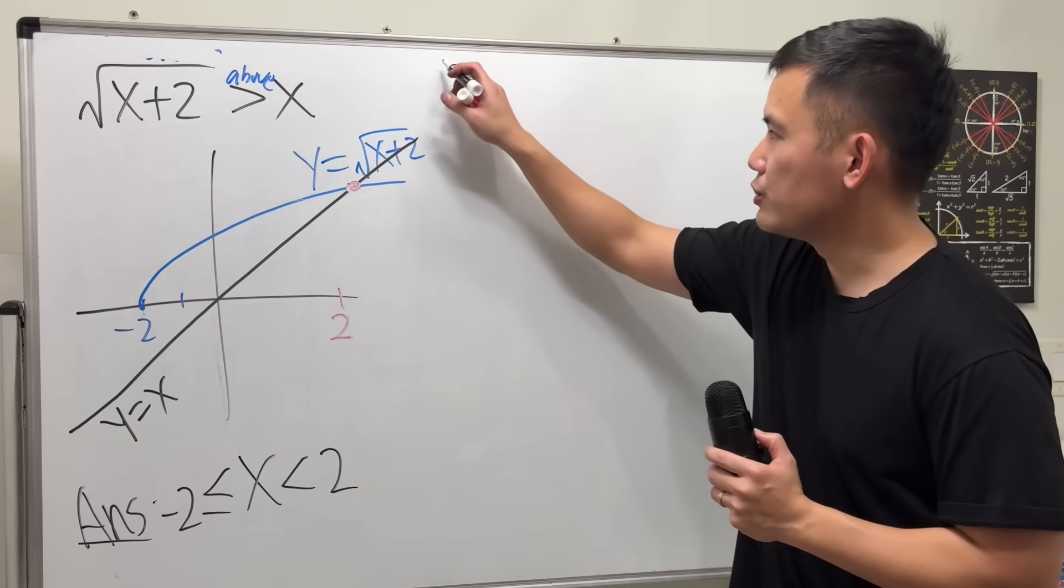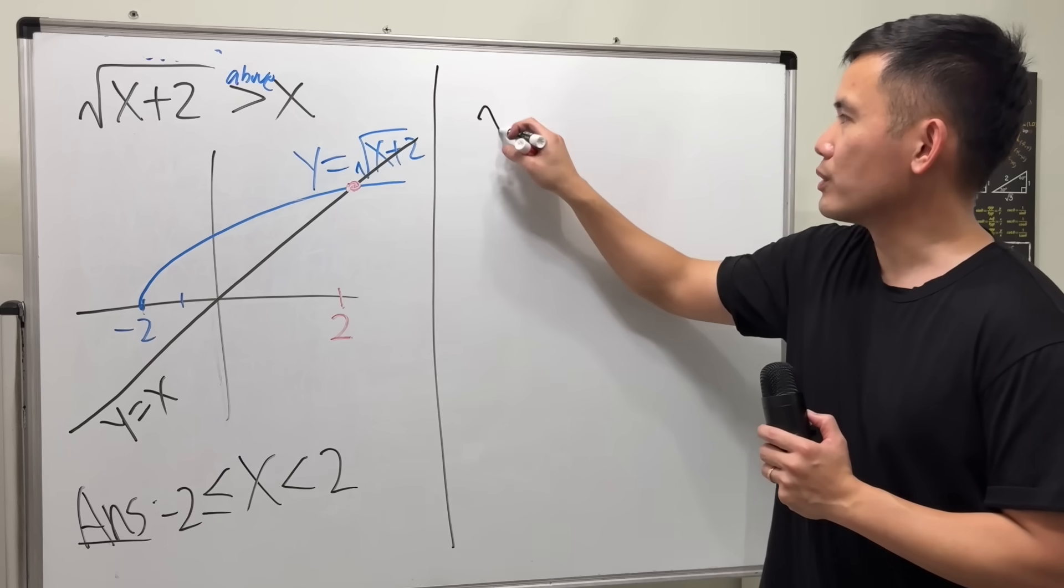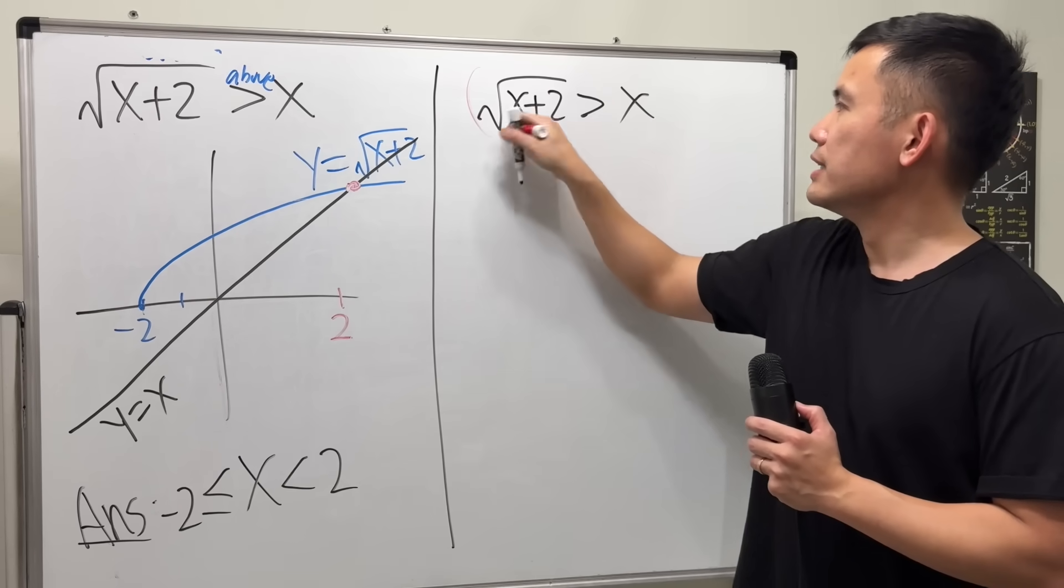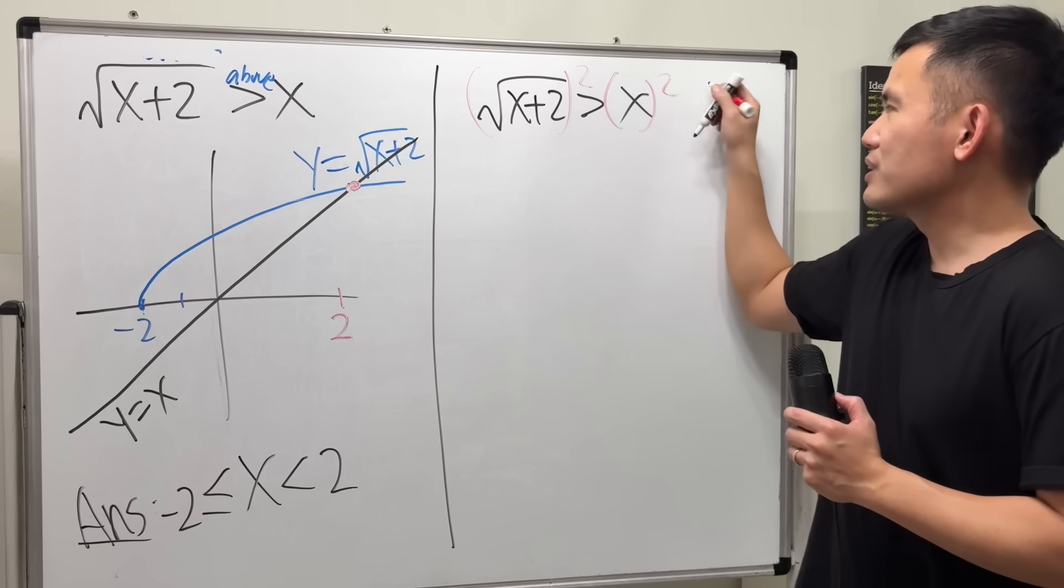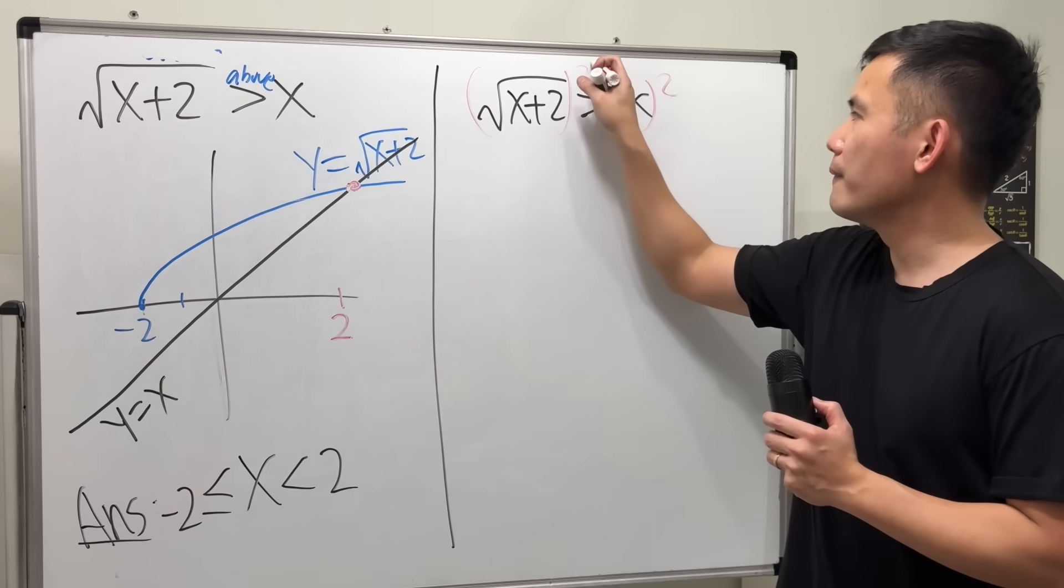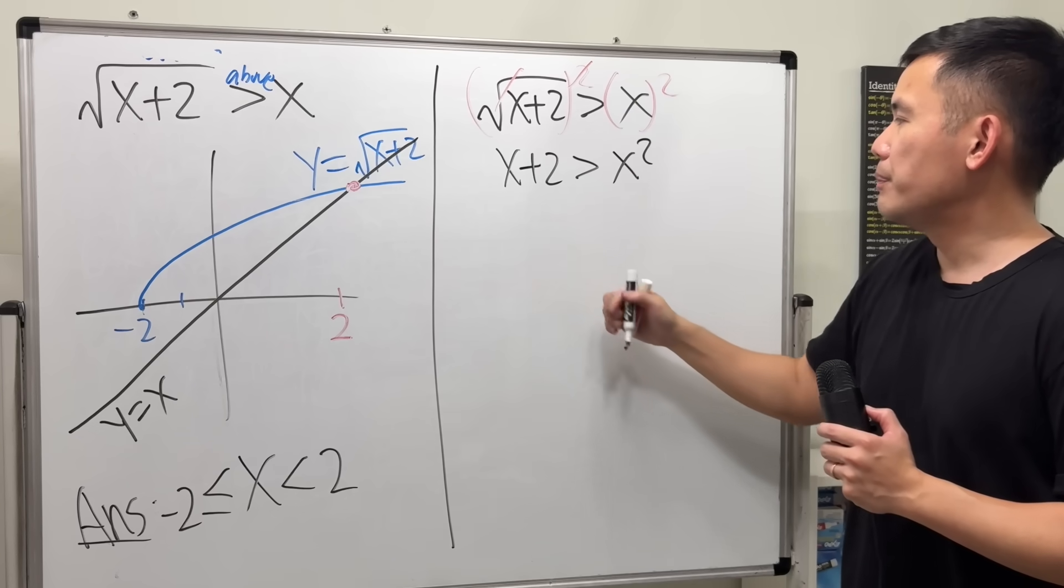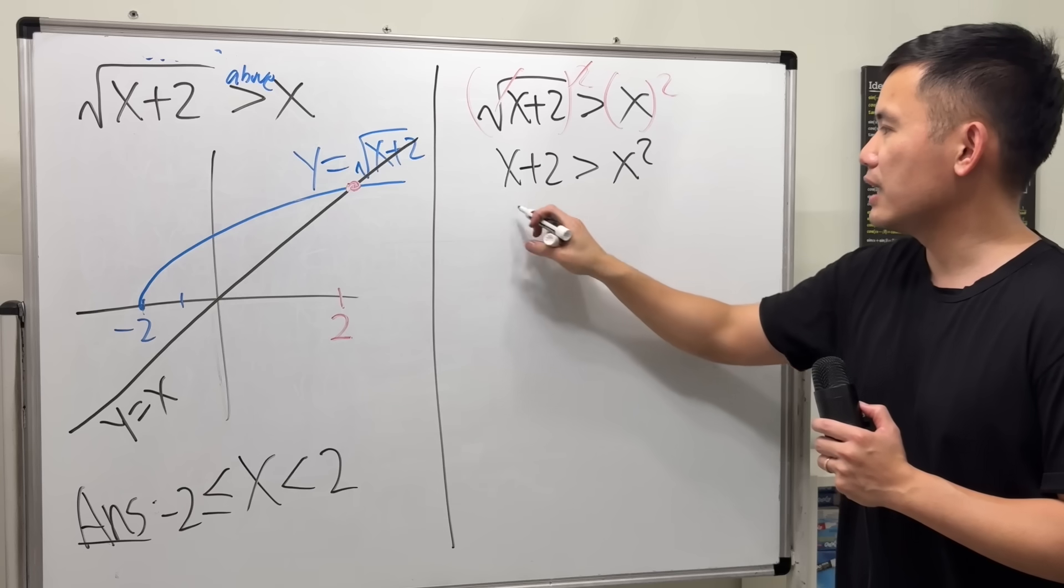Now, let's see the dangerous part if you just square both sides. If you look at this, square both sides, which looks like a typical normal thing to do, right? And we get x plus 2 greater than x squared.